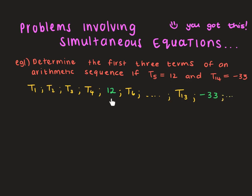The problem here is: usually we know that term 1 is just A. And to figure out the constant difference, I'd be going term 2 minus term 1 equals term 3 minus term 2. So what am I going to do if I don't know what term 1 and term 2 are?